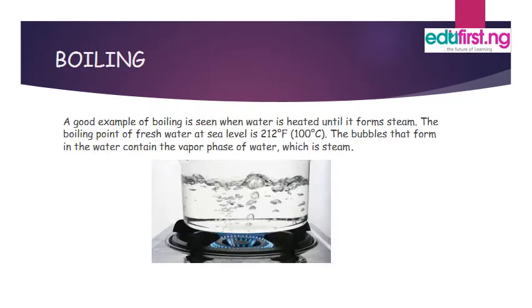Boiling. A good example of boiling is seen when water is heated until it forms steam. The boiling point of fresh water at sea level is 212 degrees Fahrenheit or 100 degrees Celsius. The bubbles that form in the water contain the vapor phase of water, which is steam.